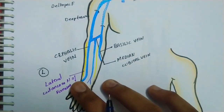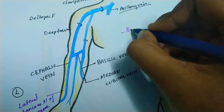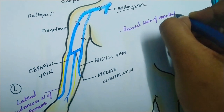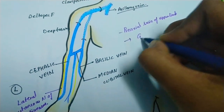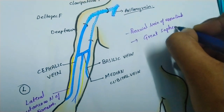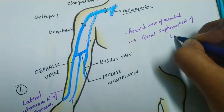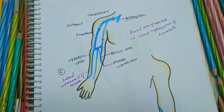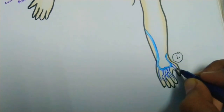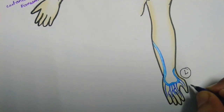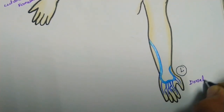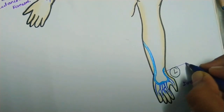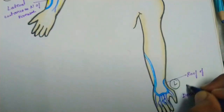The cephalic vein is the pre-axial vein of the upper limb. It corresponds to the great saphenous vein of the lower limb. In summary, it begins from the dorsal venous arch and runs through the roof of the anatomical snuffbox.